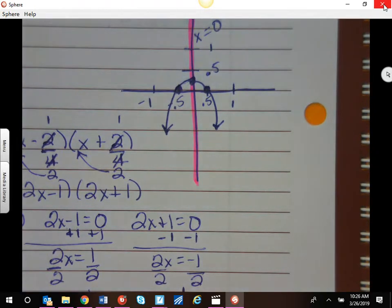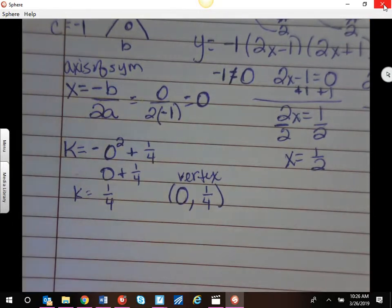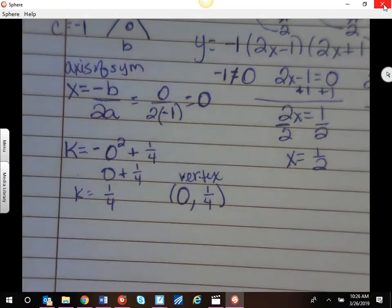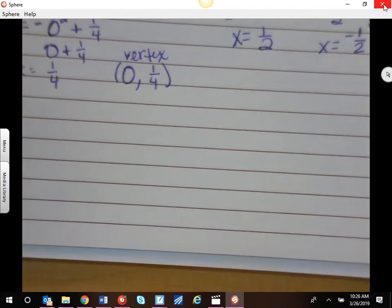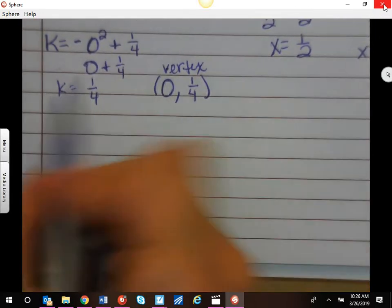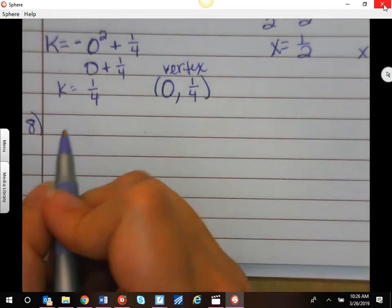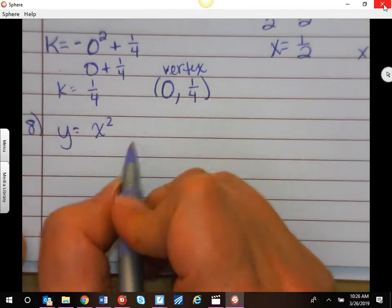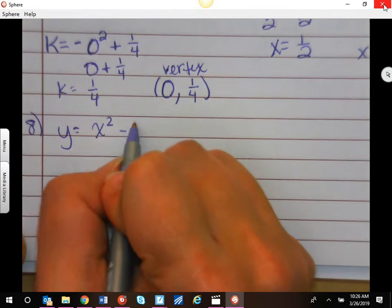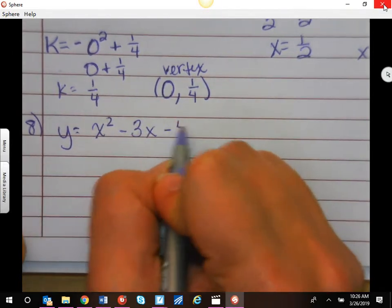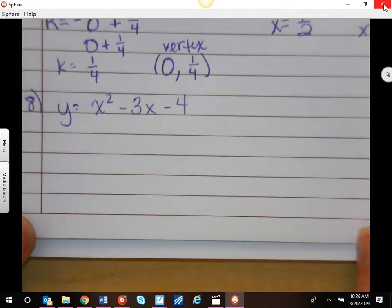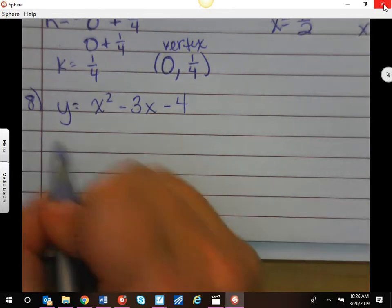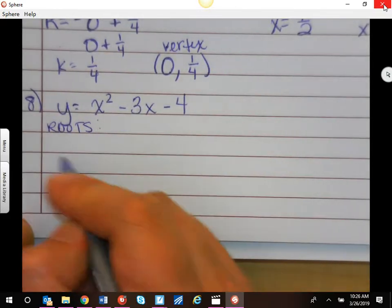Number 8 was way, way easier because it was a pretty equation. Let me move this so we can have some space. Number 8 was easy cross puzzle. There was no factoring with the GCF. So I'm going to go a little bit faster on this one. x squared minus 3x minus 4. A is positive, which makes life so much easier. There's no GCF. So to get our roots, we're going to go straight to our cross puzzle.